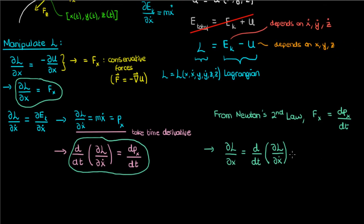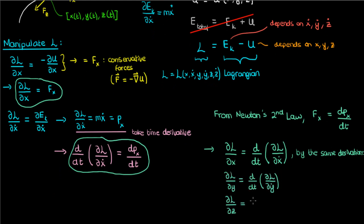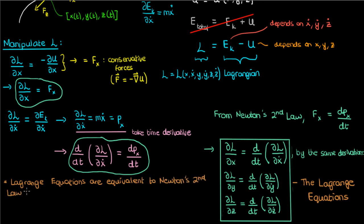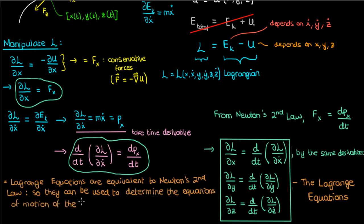You can perform the exact same derivation for the y and z coordinates, and when you do that you'll find that there are a total of three Lagrange equations for particle P in three dimensions. The idea behind these three Lagrange equations is that you can solve them to determine the equation of motion of your particle — since the Lagrange equations are equivalent to Newton's second law, we can use them to determine x(t), y(t), and z(t).